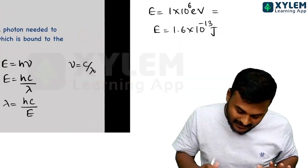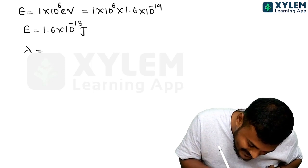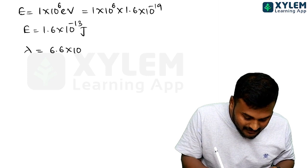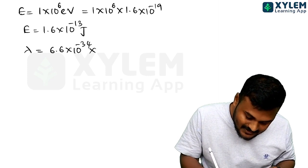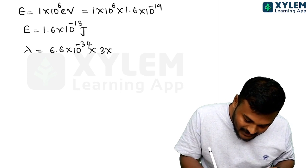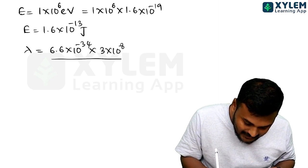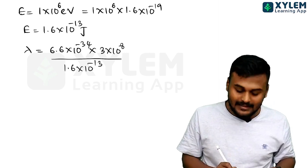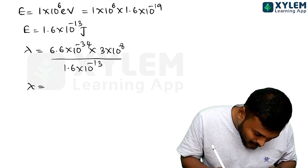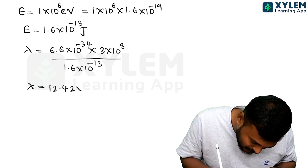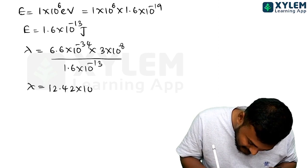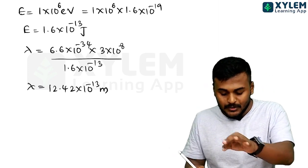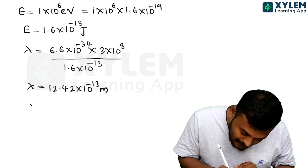Now substitute: h equals 6.63 into 10 raise to minus 34, c equals 3 into 10 raise to 8, divided by 1.6 into 10 raise to minus 13. The answer is 12.42 into 10 raise to minus 13 meter, or 1.2 into 10 raise to minus 3 nanometers.